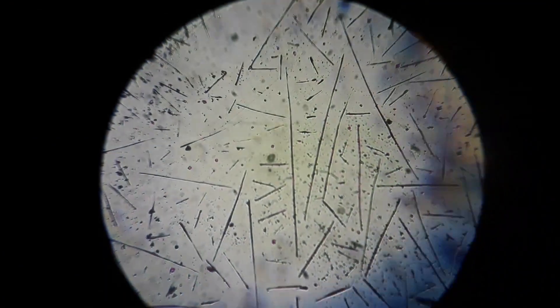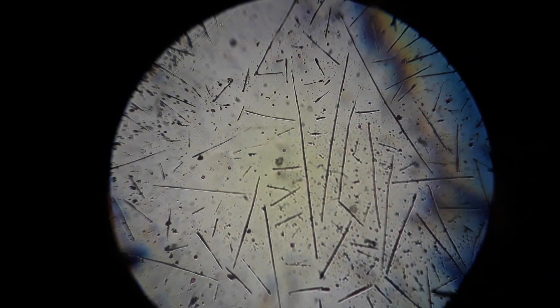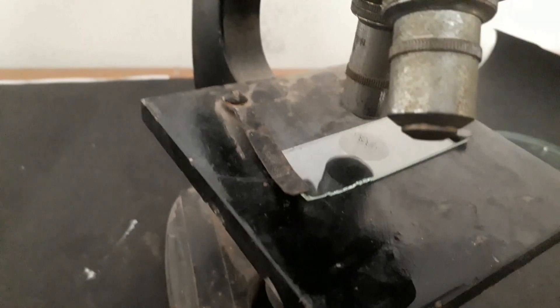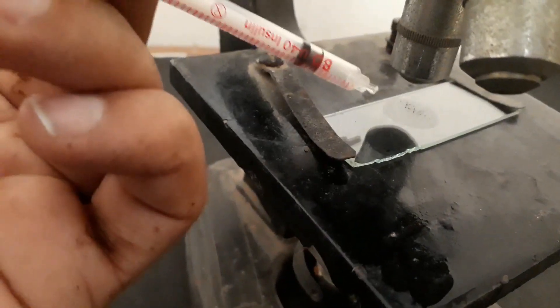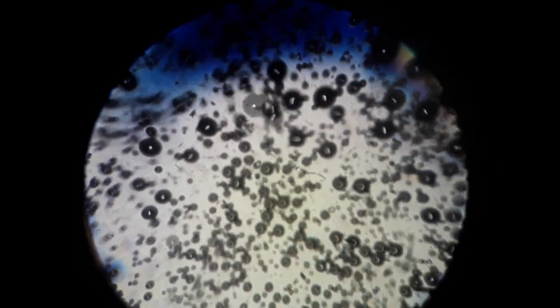It needs to be in the proper position so that we can observe the crystals. Here you can see these are the crystals of potassium permanganate. Now I will spray the hydrogen peroxide on the slide.